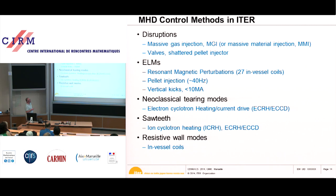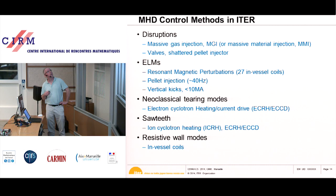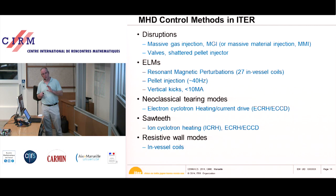For disruptions, the control method is to inject a large amount of gas so that the plasma energy is radiated to the walls uniformly, rather than depositing in one place. This is either massive gas injection or massive material injection — large argon or deuterium pellets. ELMs can be controlled by applying resonant magnetic perturbations. ITER will have 27 in-vessel coils of a helical nature inside the plasma, which can stabilize ELMs — really make them disappear.